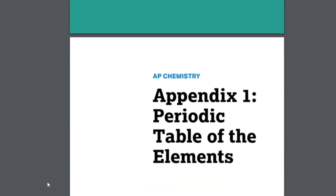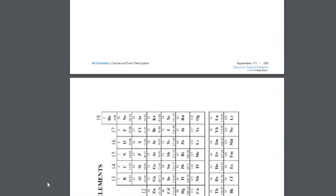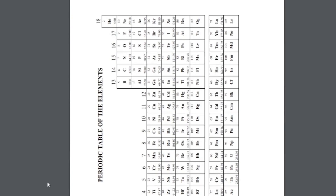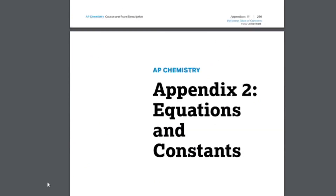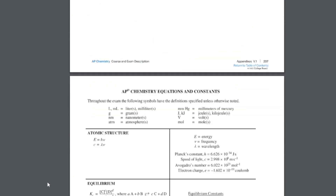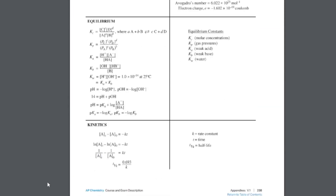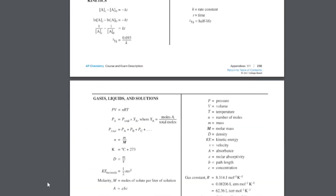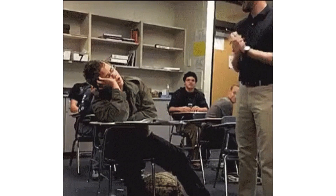For your STEM classes, if you continue scrolling you'll find reference sheets, which are given on the AP exam. There are a lot of formulas here. If you're taking AP Chem, you'll also have the periodic table.